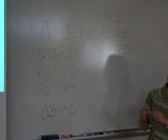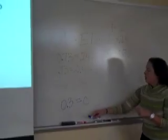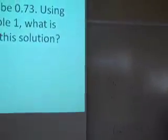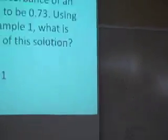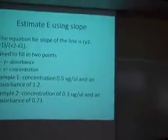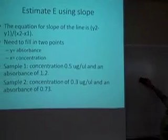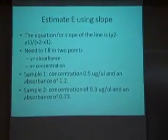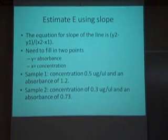You're going to have to do one like this on your homework as well. The homework is also asking you to calculate the E value instead of using the Beer-Lambert Law, rather to estimate E using the slope of the line.